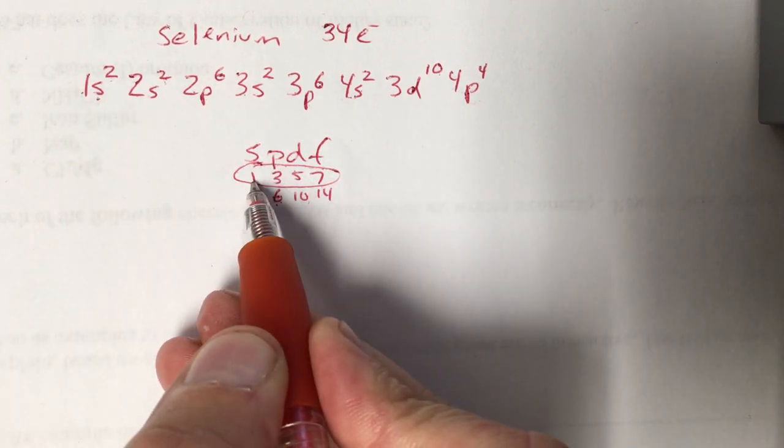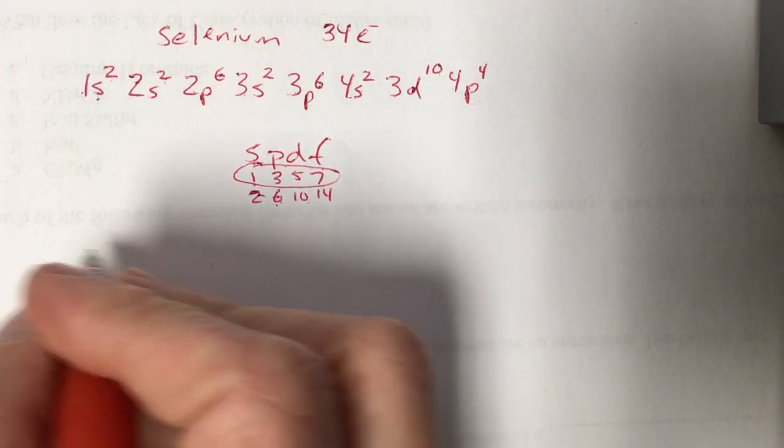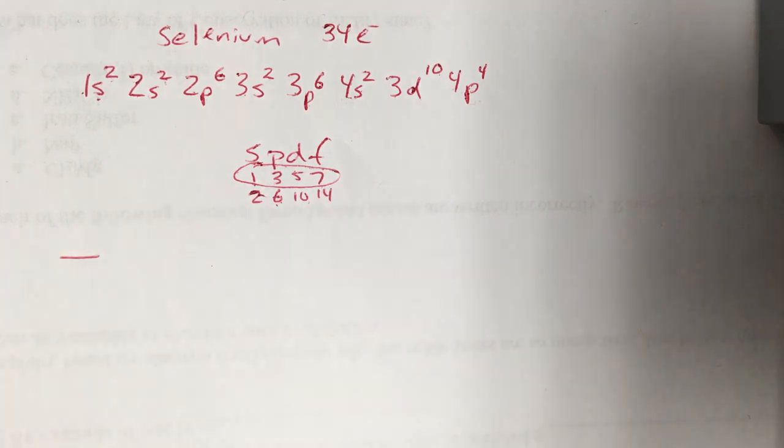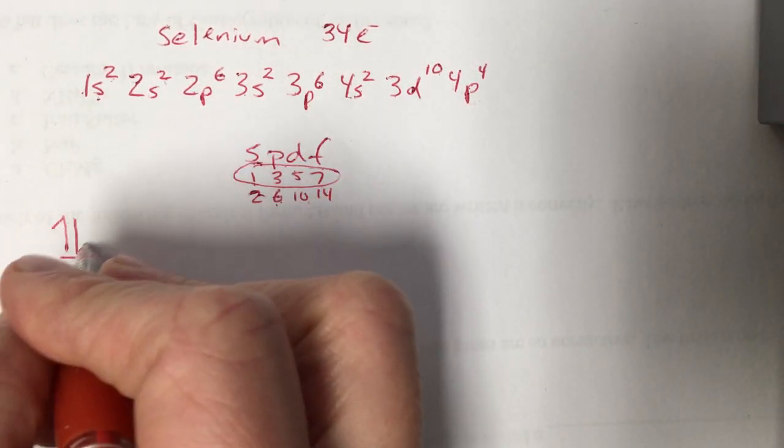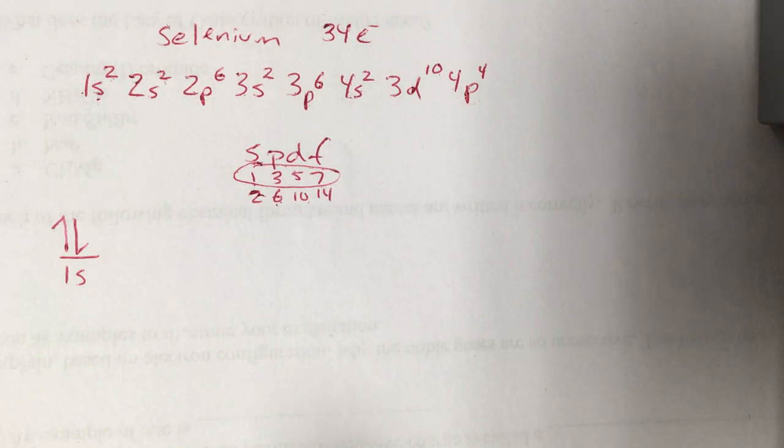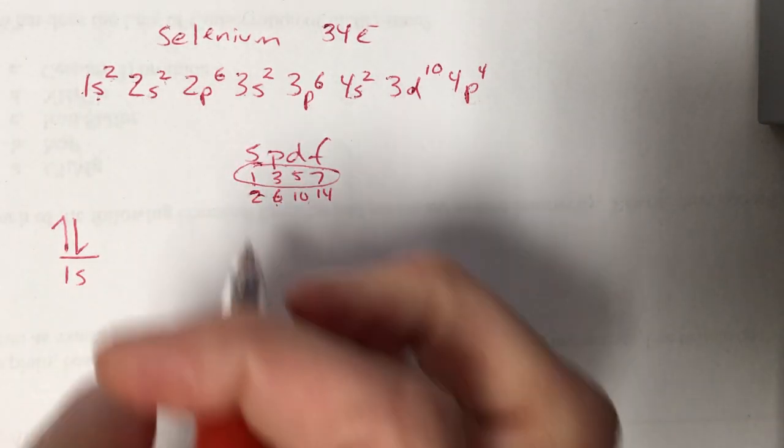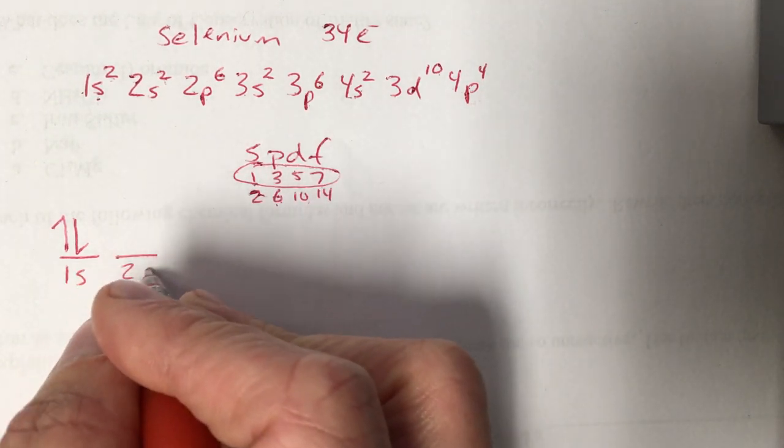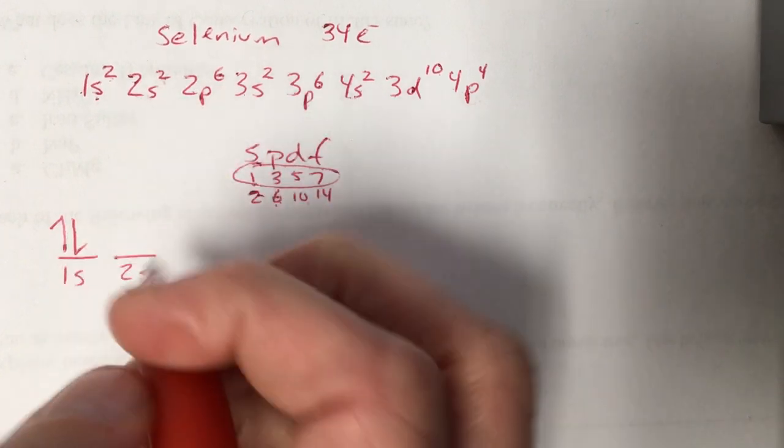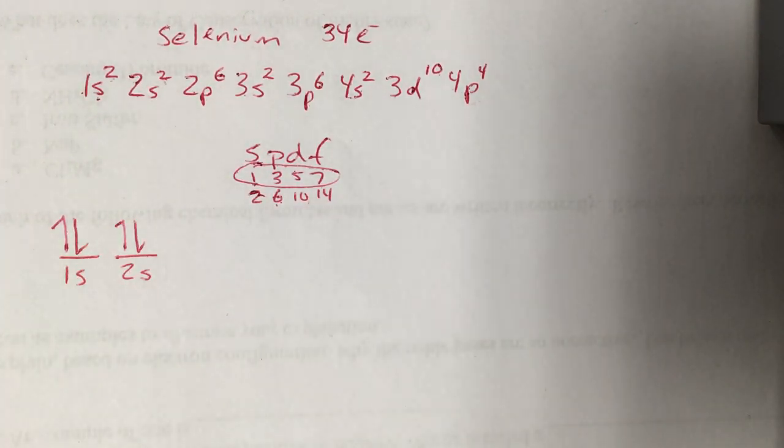S orbitals have one sublevel. So when you get to an s orbital, all you got to do is draw a little line and label it what orbital it is. 1s. This s orbital has two electrons in it. So an arrow going up and an arrow going down. Again, opposite spin. Next orbital is 2s, and again the s orbital has one sublevel. So it's 2s. Again two electrons. So one going up, the other going down.